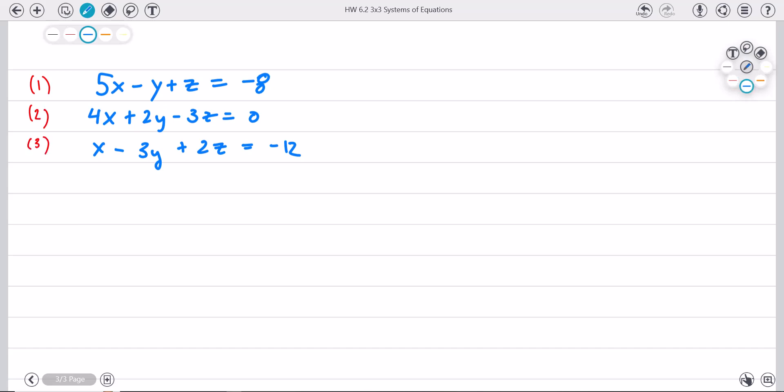So the first thing I'm going to do is take equation one and multiply it by two. Why? Because if I multiply this by two, it's going to be negative two y, and that'll cancel a variable, which is kind of the whole point. So two times five x minus y plus z equals negative eight. Multiply everything by two.